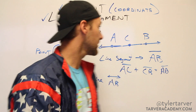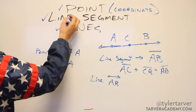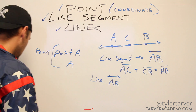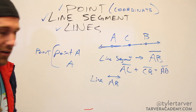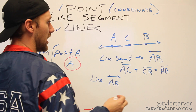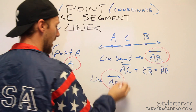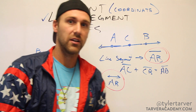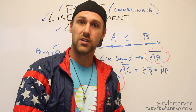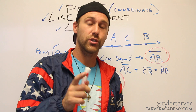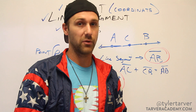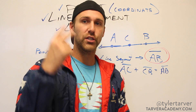So those are the basic differences between points, line segments, and lines. You've also got a chance to look at how you would label those: we label a point as A, a line segment as AB with the segment notation, and a line as AB with arrows. Tell your teacher how smart you are. Love your life, love your dreams, love pizza. Make sure you check out tarveracademy.com and give it a subscribe — that would be really dope of you. Peace.